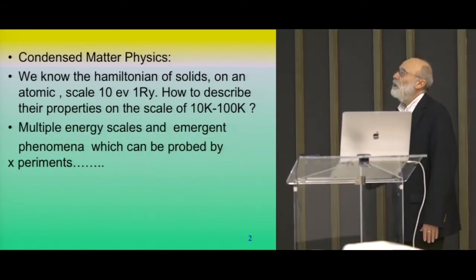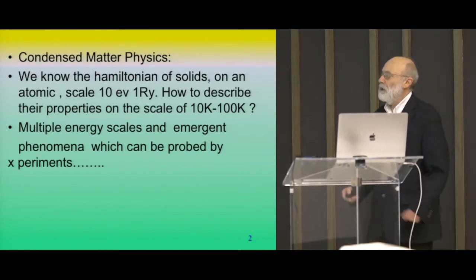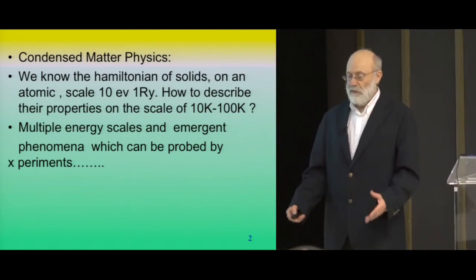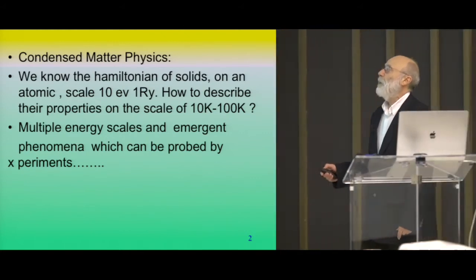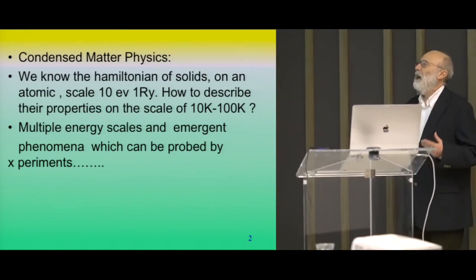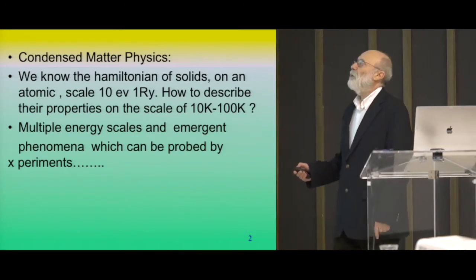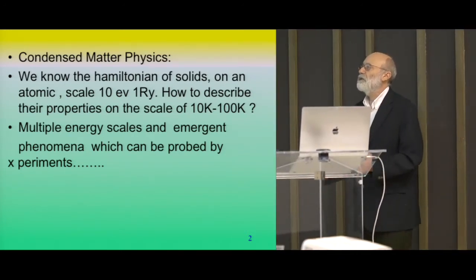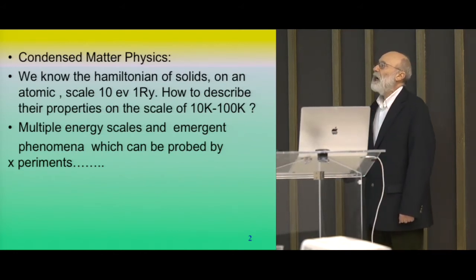The reason why this problem is challenging, even though we know the Hamiltonian, is because we're dealing with multiple energy scales and emergent phenomena — things that happen at low energies where the degrees of freedom rearrange themselves and can result in new properties, such as high temperature superconductivity, metal-to-insulator transitions, or many interesting types of ordering.